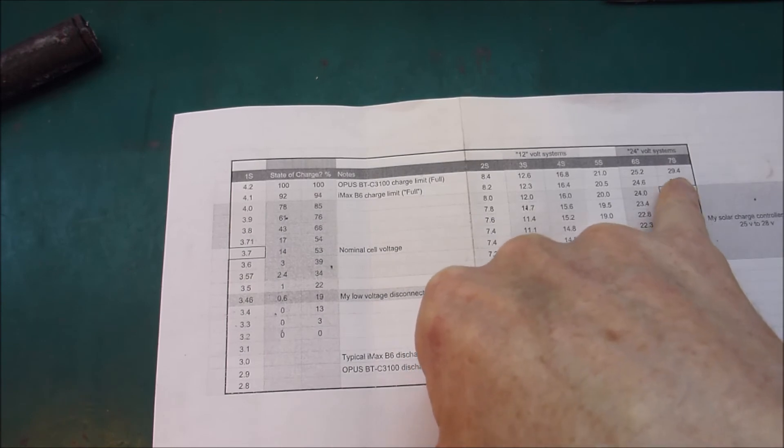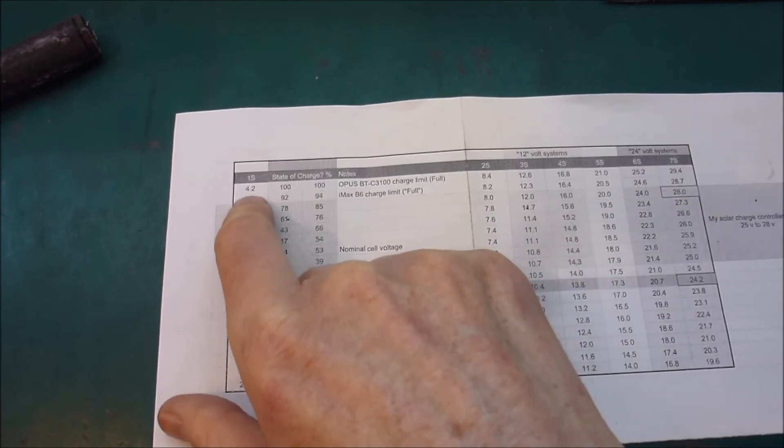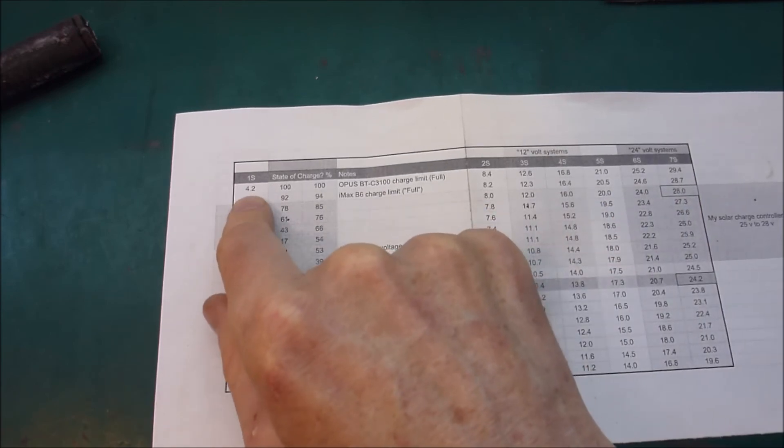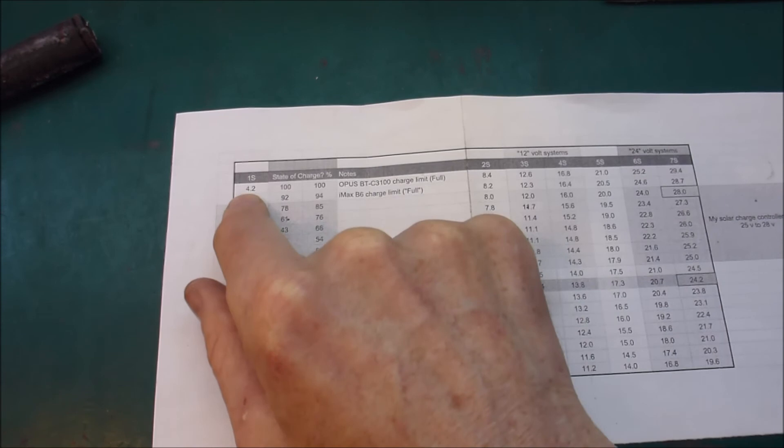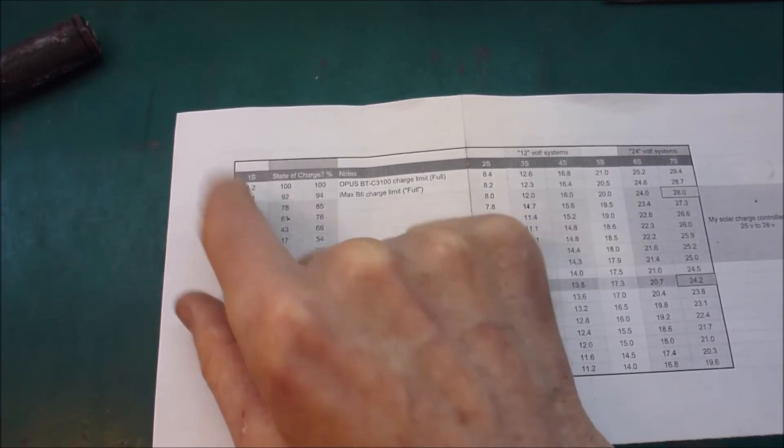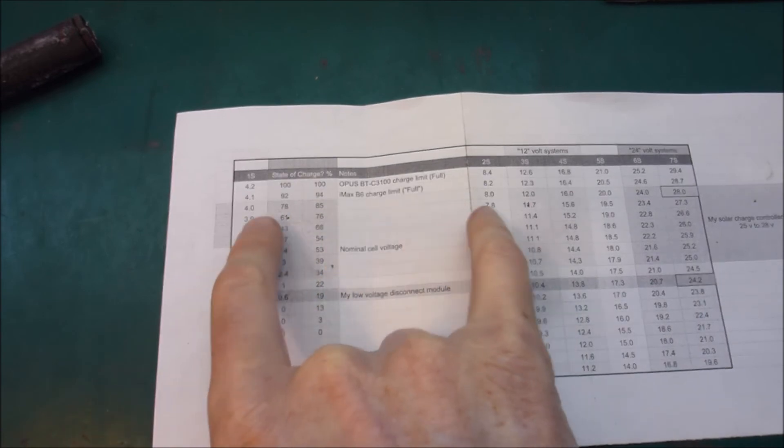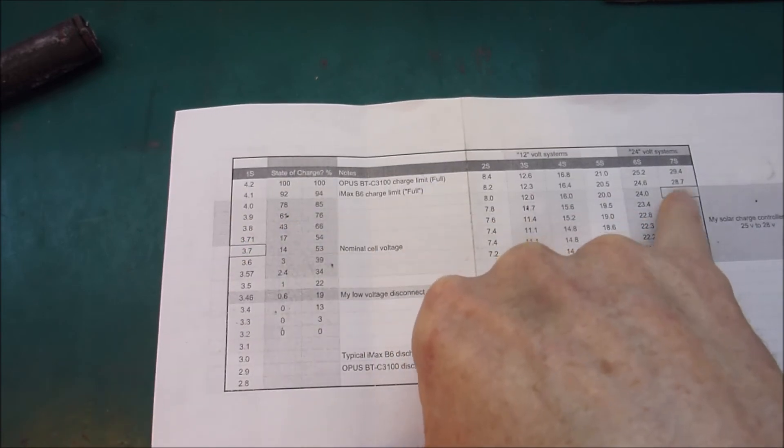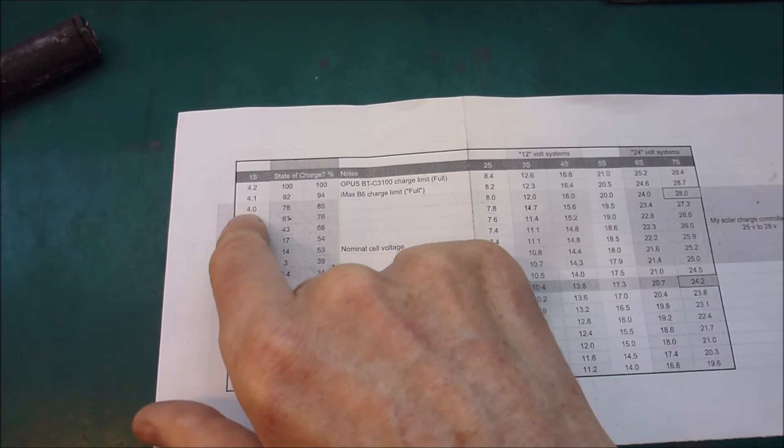Whereas if I was charging up to 29.4 then I really, really have to have a good BMS that balances all the packs to be beautifully 4.2 volts. Otherwise, if I'm only going up to 28 volts I don't need nearly so good a balancing system.